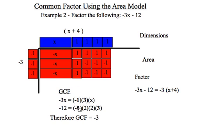However, we're looking for the greatest common factor and we can see that because negative 3x and negative 12 both have a negative 1 in them as a building block, we might as well try and factor that out right at the beginning. So negative 1 and 3 are both common.